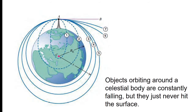This is an illustration based on Isaac Newton's book, The Principia. Objects orbiting around a celestial body are constantly falling but they just never hit the surface. Look at paths 1 and 2 — the initial velocities are not strong enough, and they hit the Earth. Paths 3, 4, and 5 are closed orbits with enough velocity to complete an orbit around the Earth. Paths 6 and 7 are open orbits.